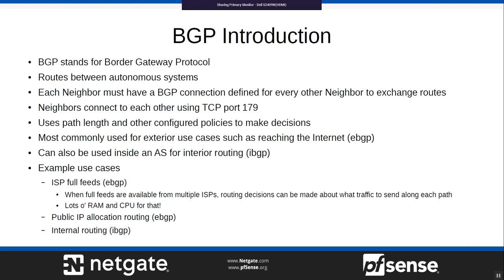BGP stands for Border Gateway Protocol. It routes between autonomous systems, so each side will have its own AS number. Each neighbor must have a BGP connection defined for every other neighbor to exchange routes — a full mesh — so everyone has an explicit definition for every other BGP neighbor. That can have some management overhead.